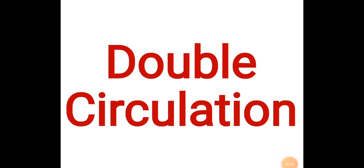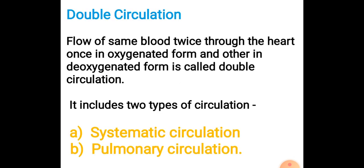Welcome to biology class. Today we will discuss double circulation. We have already discussed single circulation found in fishes, where we covered closed and open vascular circulatory systems. In fishes, single circulation occurs because there is one auricle and one ventricle. In single circulation, blood comes only once through the heart in one cardiac cycle, whereas in double circulation, the same blood flows twice through the heart — once in oxygenated form and once in deoxygenated form.